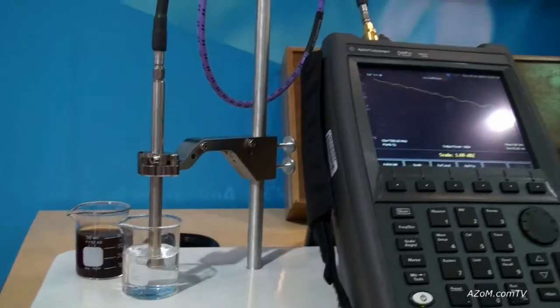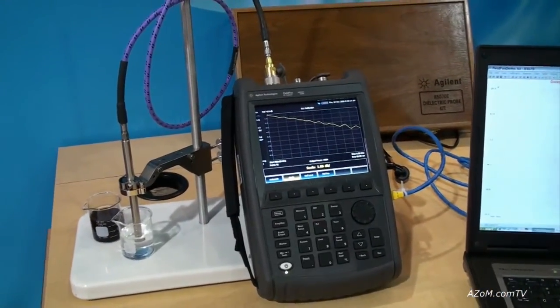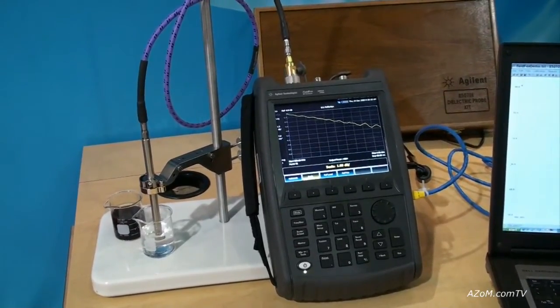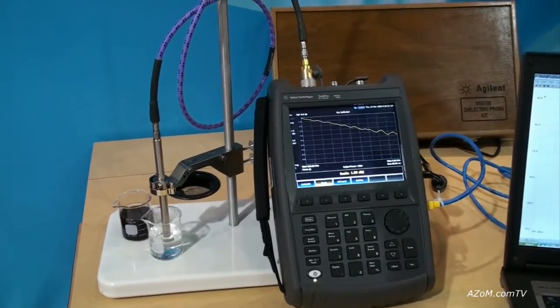So we measure the reflection, and from that we can calculate permittivity, the real and the imaginary part. We can calculate loss tangent and Cole Cole model also.